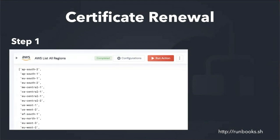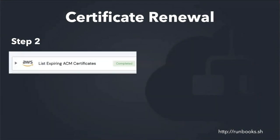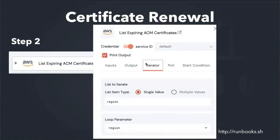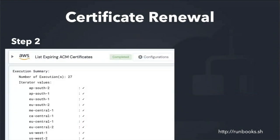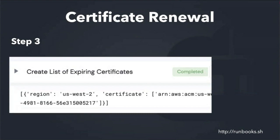Step two is another action you drag into your runbook. This runbook is already built, so if you use this open source tool — again, runbooks.sh — you can just set up the runbook, add your credentials, and run it. We loop through using an iterator: for every region in that list of regions we just calculated, run this. So it's going to run 27 times, giving us 27 results — a long dictionary of all the expiring certificates. I wrote a little Python snippet to extract exactly what I wanted, and I actually found one of our certs was about to expire.